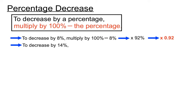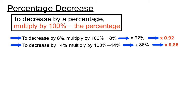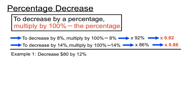Another example: to decrease by 14%, we multiply whatever number we want to decrease by 100% minus 14%, which is 86%. The decimal version — following the pattern — is 0.86.